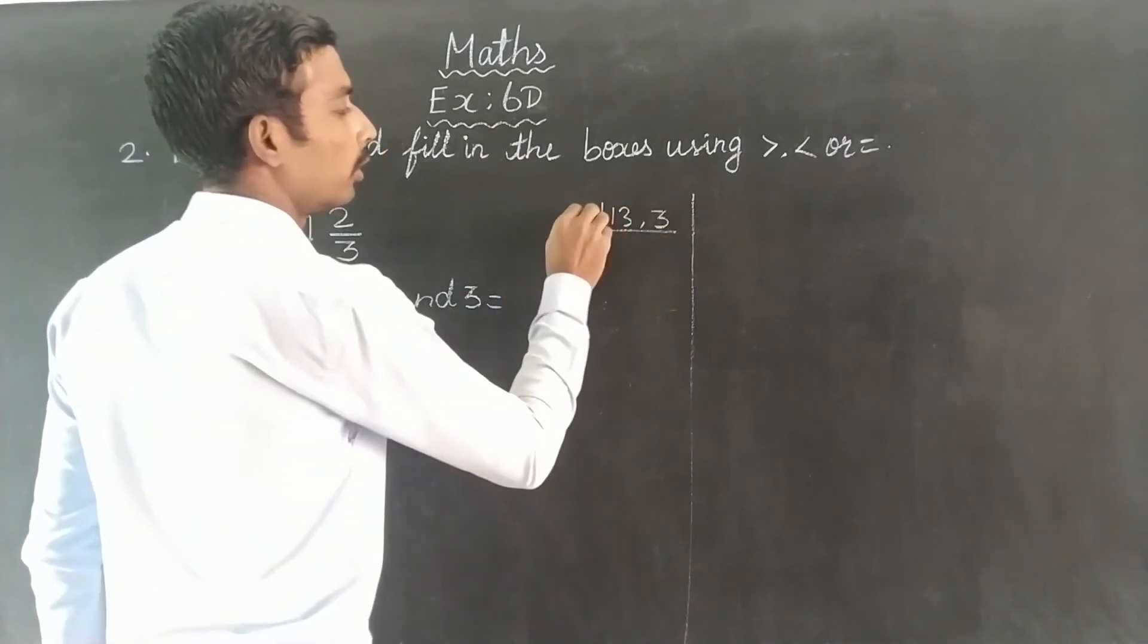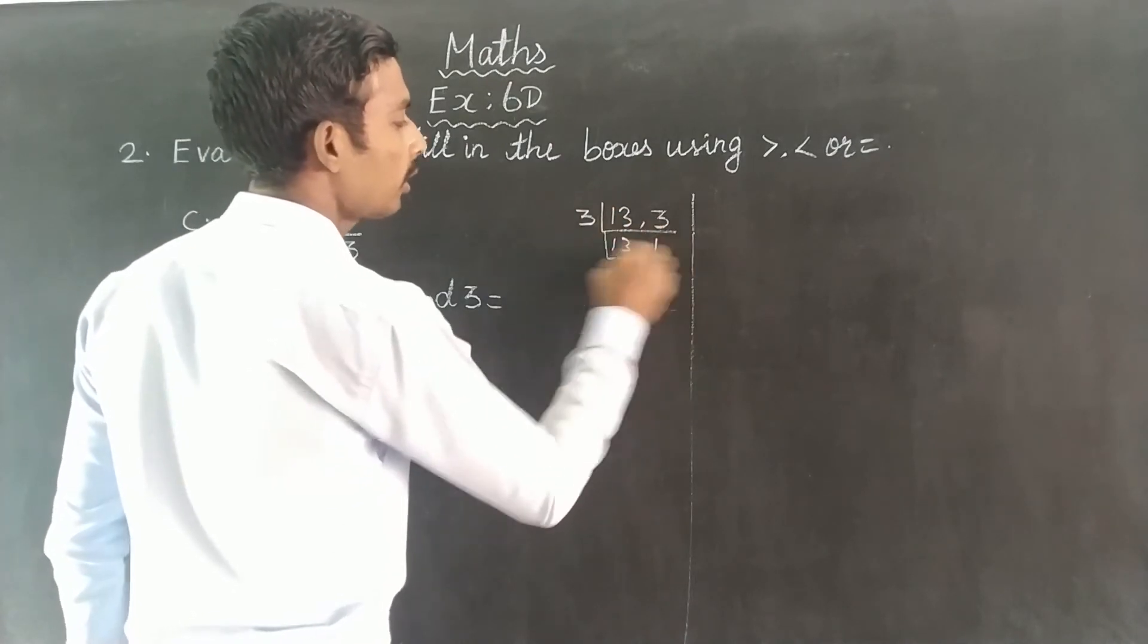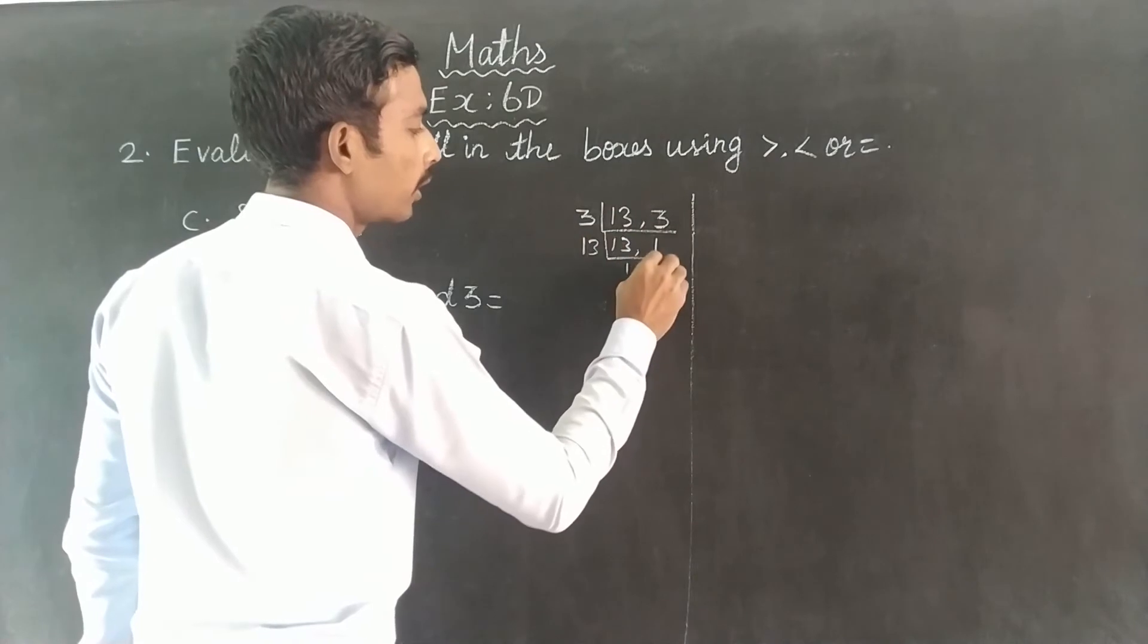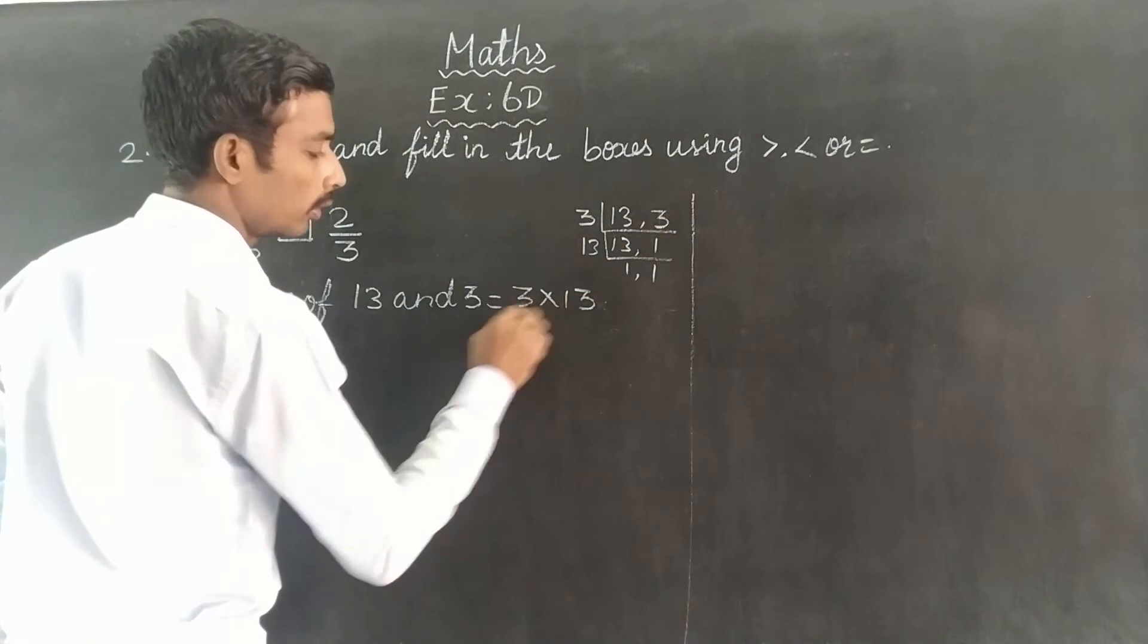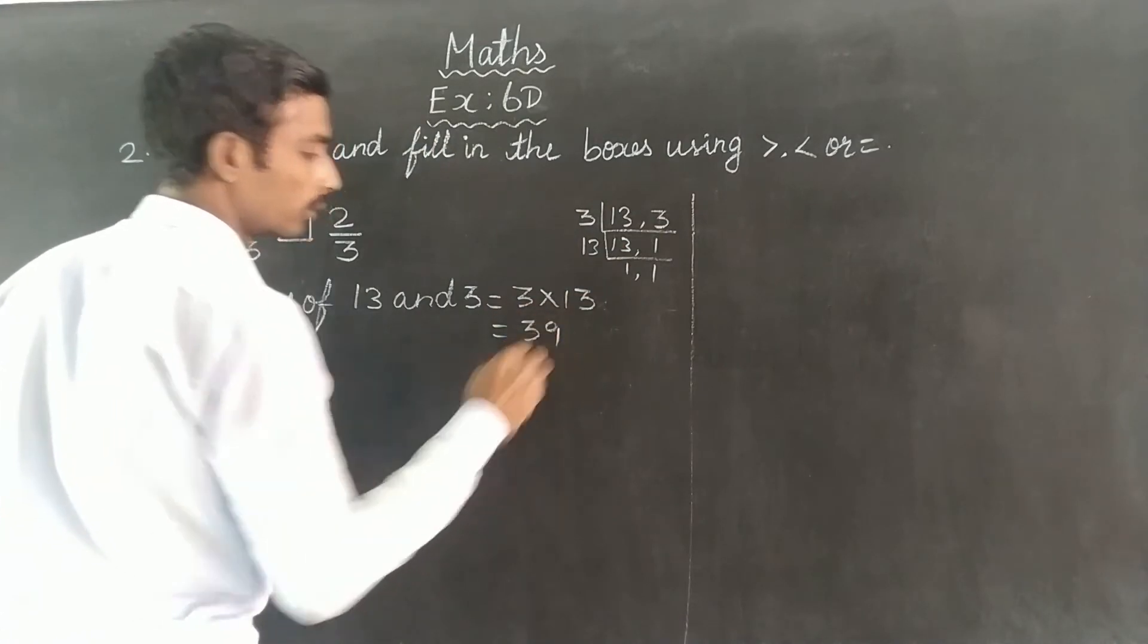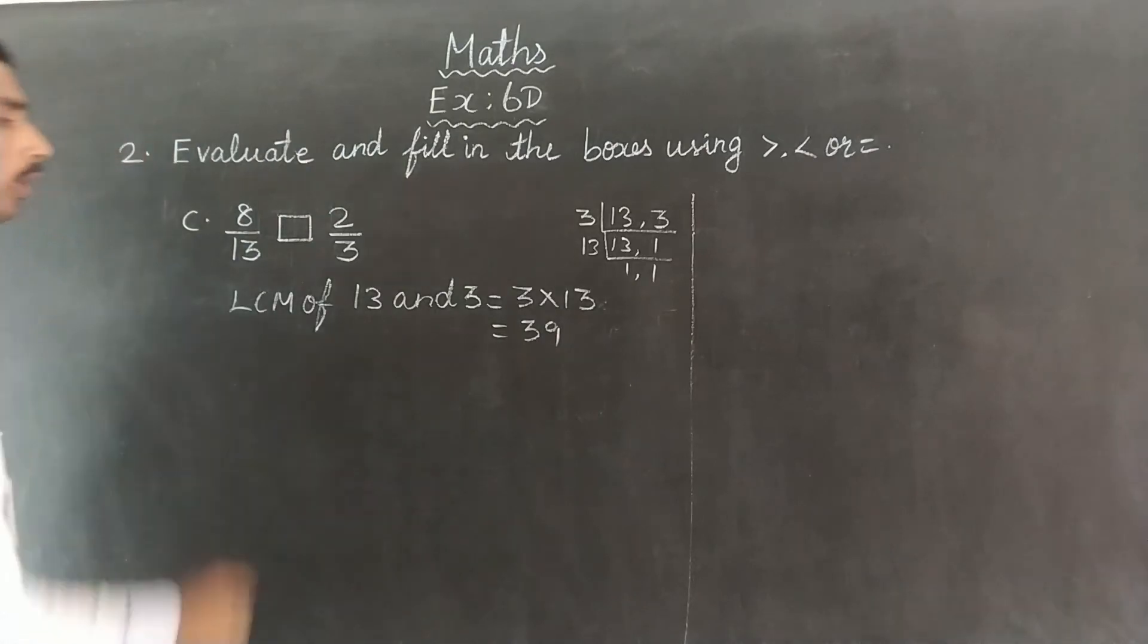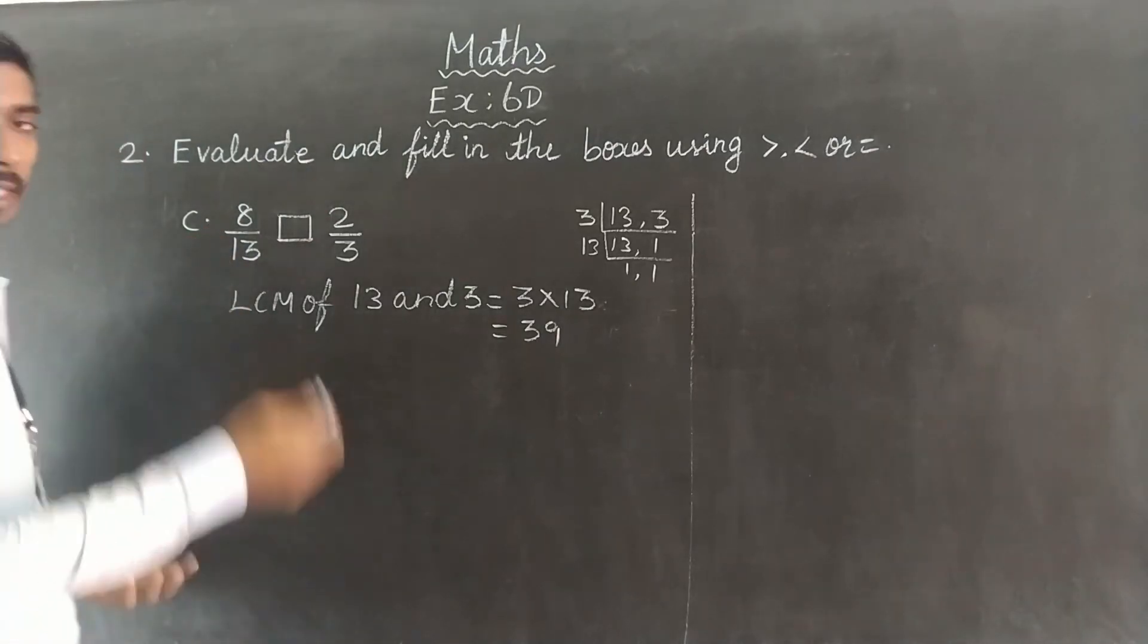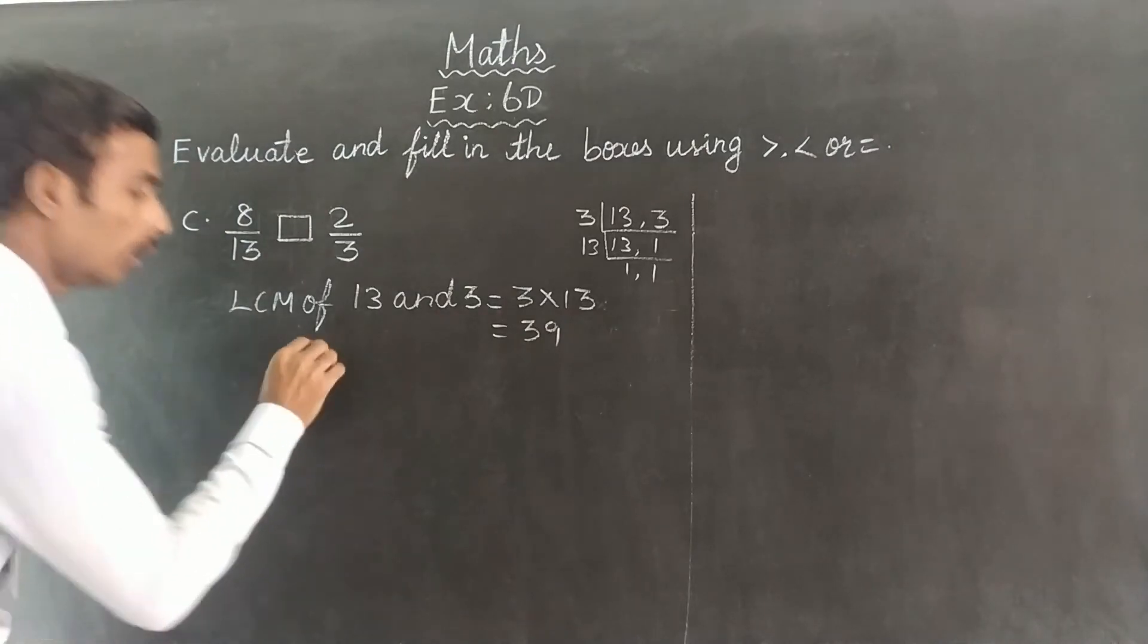We are going to find the LCM of 13 and 3. Next, 13 and 3. So we are going to calculate 3 into 13, which equals 39. The LCM is 39.